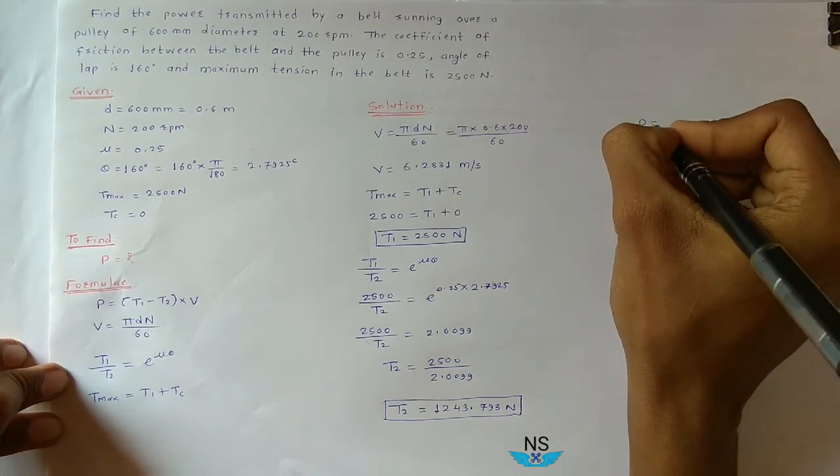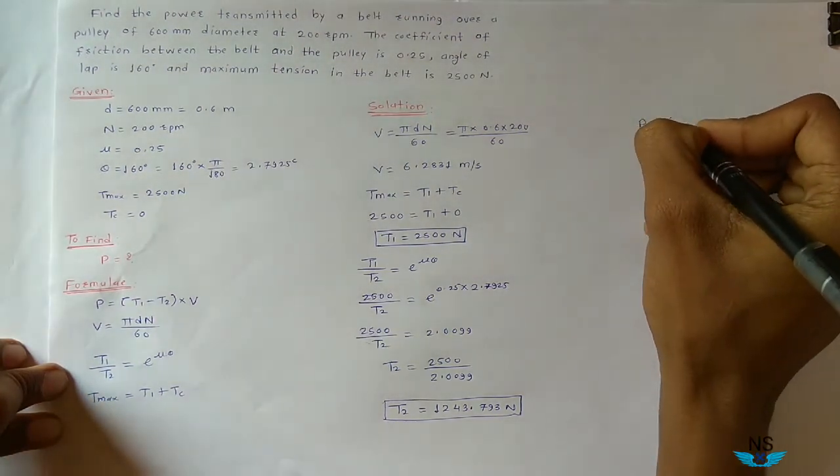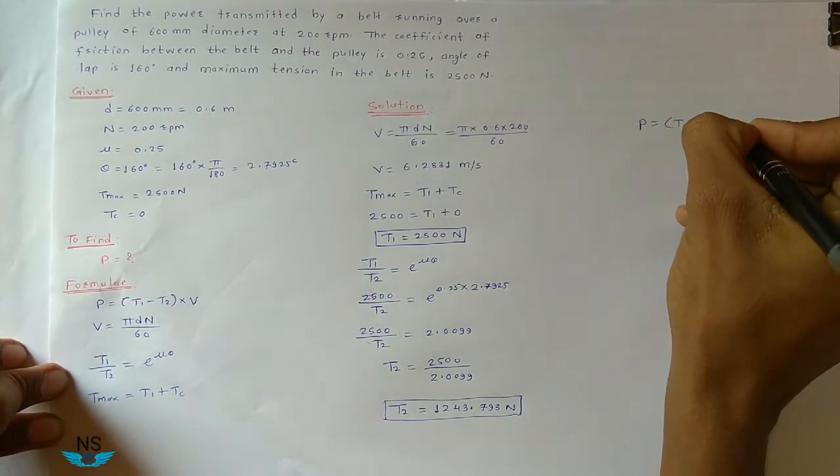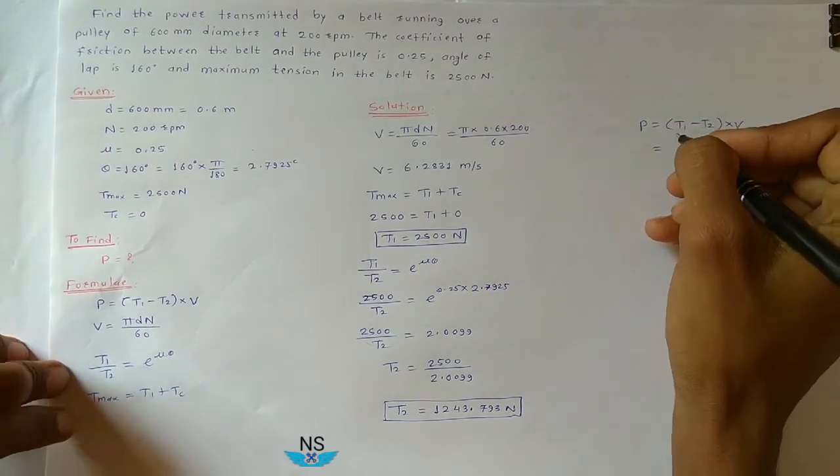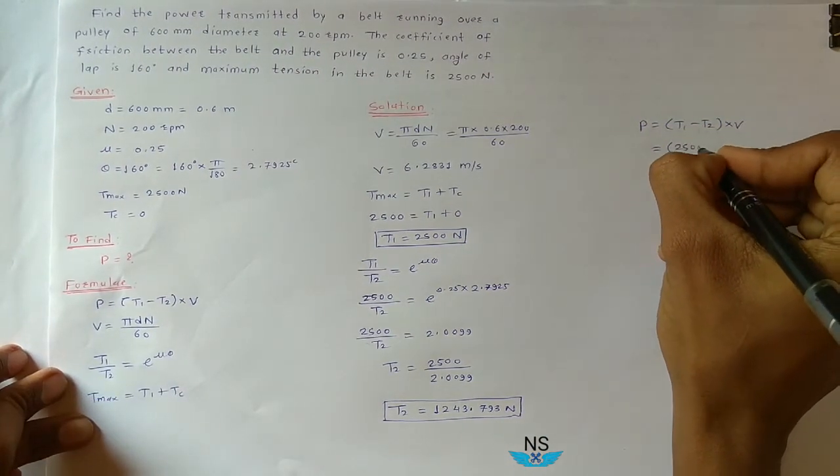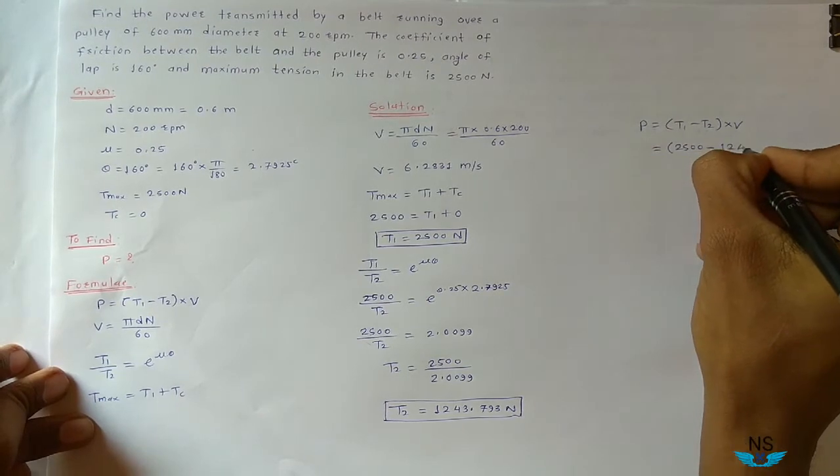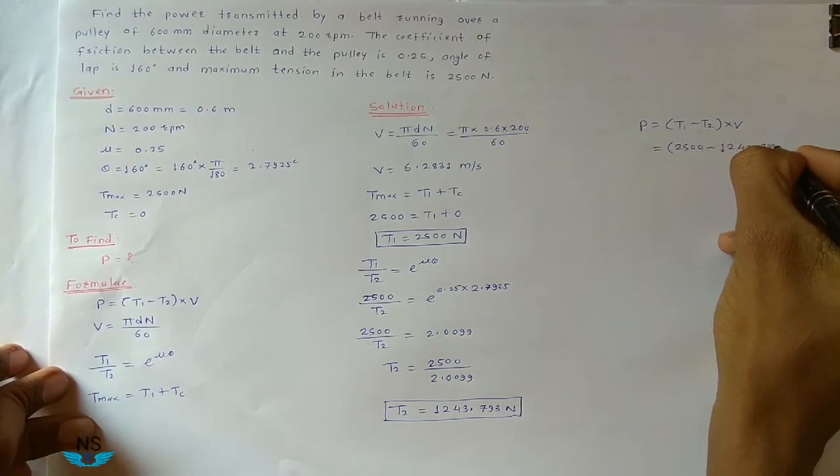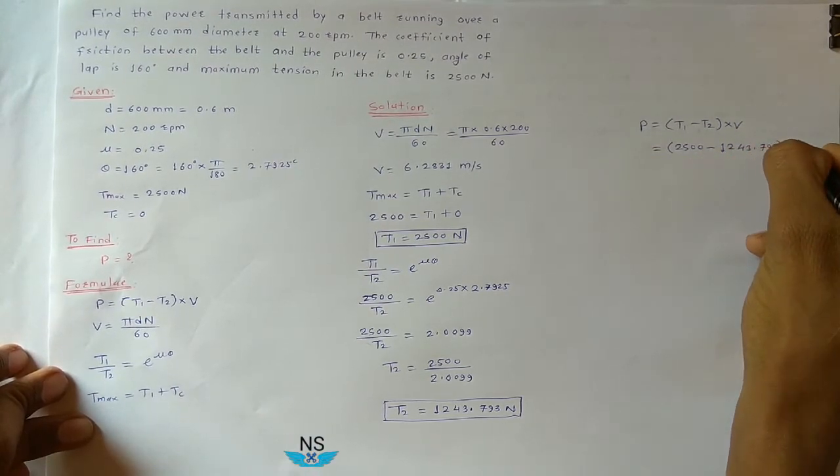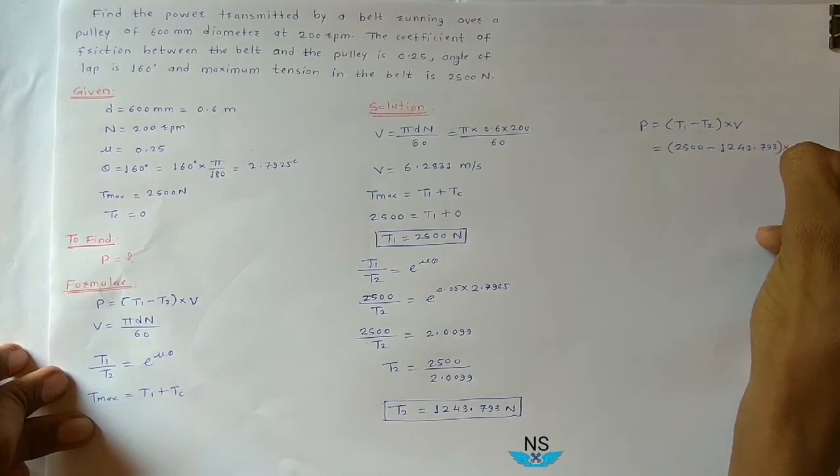Now find out power. Power P is equal to T1 minus T2 into V. T1 2500 minus T2 1243.793 into V 6.2831.